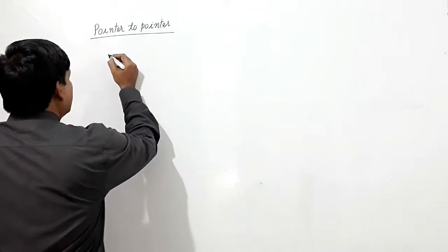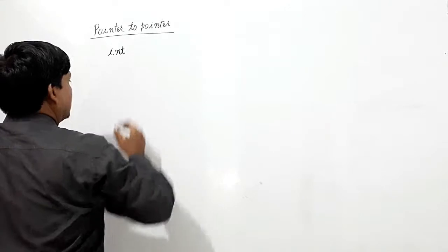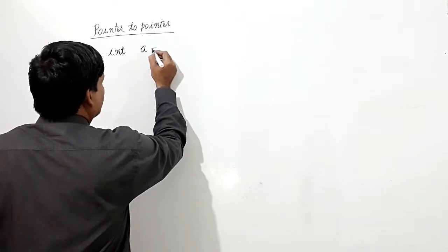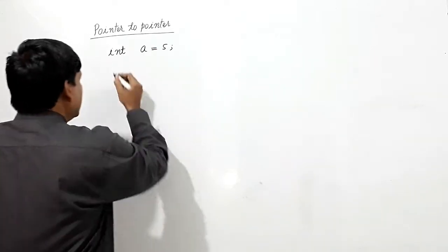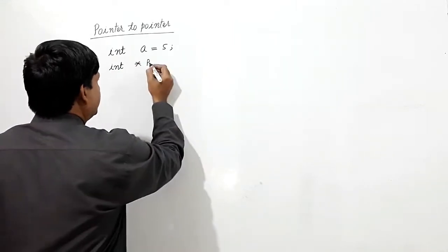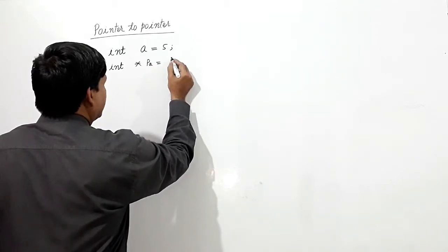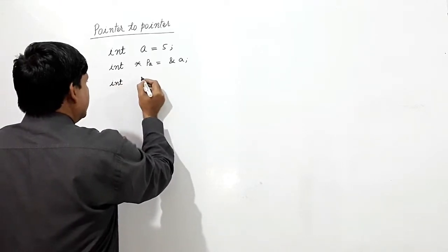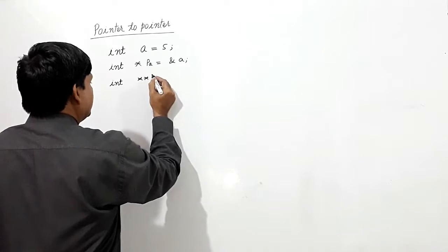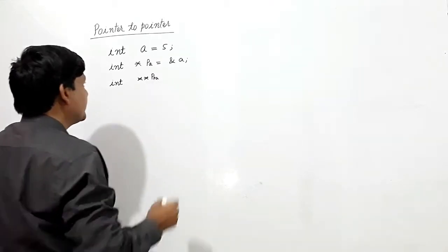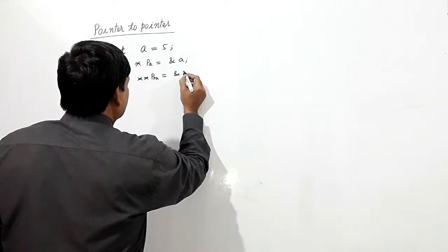The concept of pointer to pointer — taking an example here: I am taking a variable 'a' of type integer which is assigned value 5. I am taking a pointer to integer 'pa' which is holding the address of 'a'. Now, I am taking another pointer which is pointer-to-pointer 'ppa', which is holding the address of 'pa'.